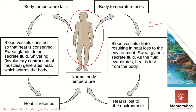You might think the body's temperature should change and vary accordingly with the season, but what happens is that the body's temperature will always remain the same, or at least very close to 37 degrees Celsius. This is because the body regulates temperature through something known as negative feedback loops.